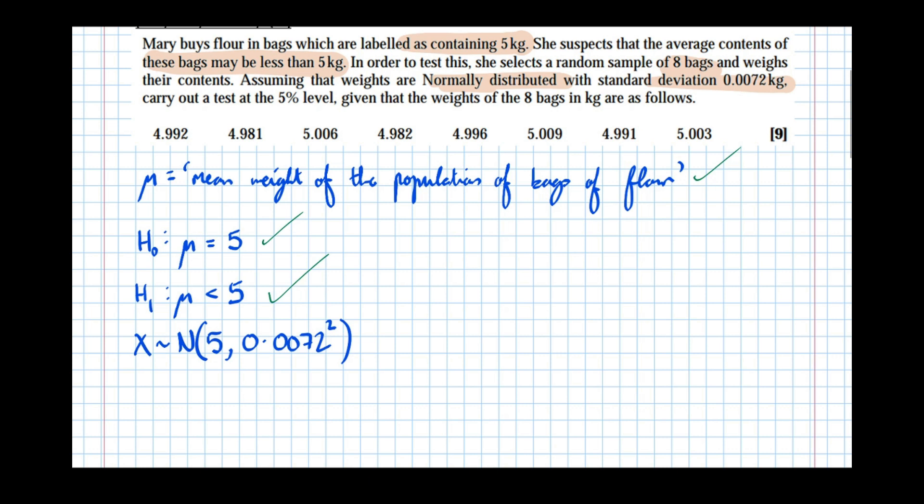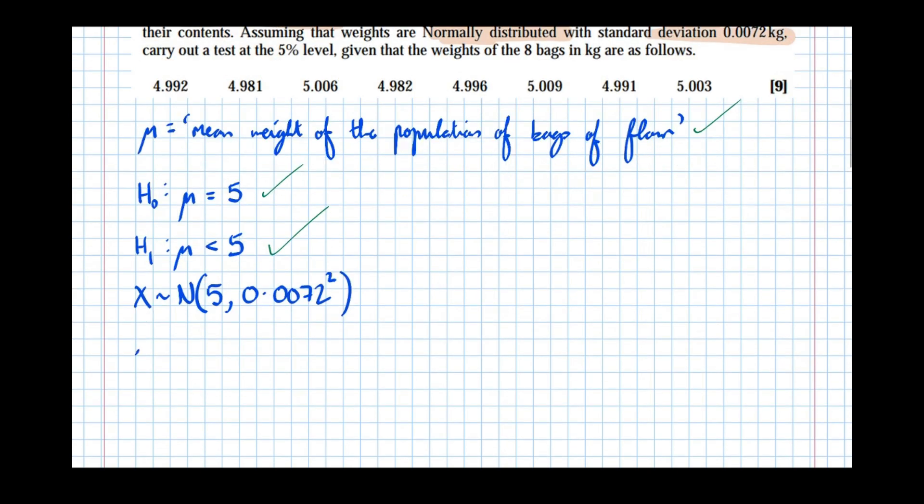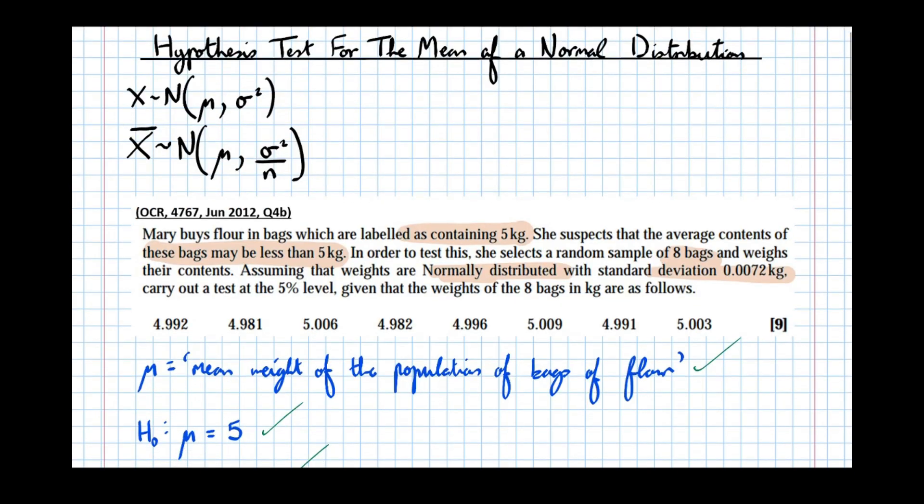Right, so we've got that information down. However, we're testing the mean of the distribution. This here is the value of a bag of flour, the weight of a bag of flour. We actually need the mean of 8, and that's where our original fact about the mean of a normal distribution having that distribution comes in.